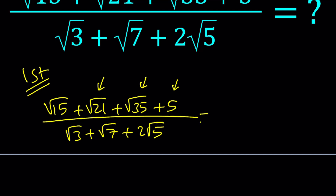And of course 5 is an integer which can be obtained by multiplying root 5 by itself. I'm assuming that this expression is going to be of the form a root 3 plus b root 5 plus c root 7, plus a possible d as an integer. A, b, c, d are hopefully integers or at least rationals, because if they are rationals we can solve it — if there is a solution, of course.